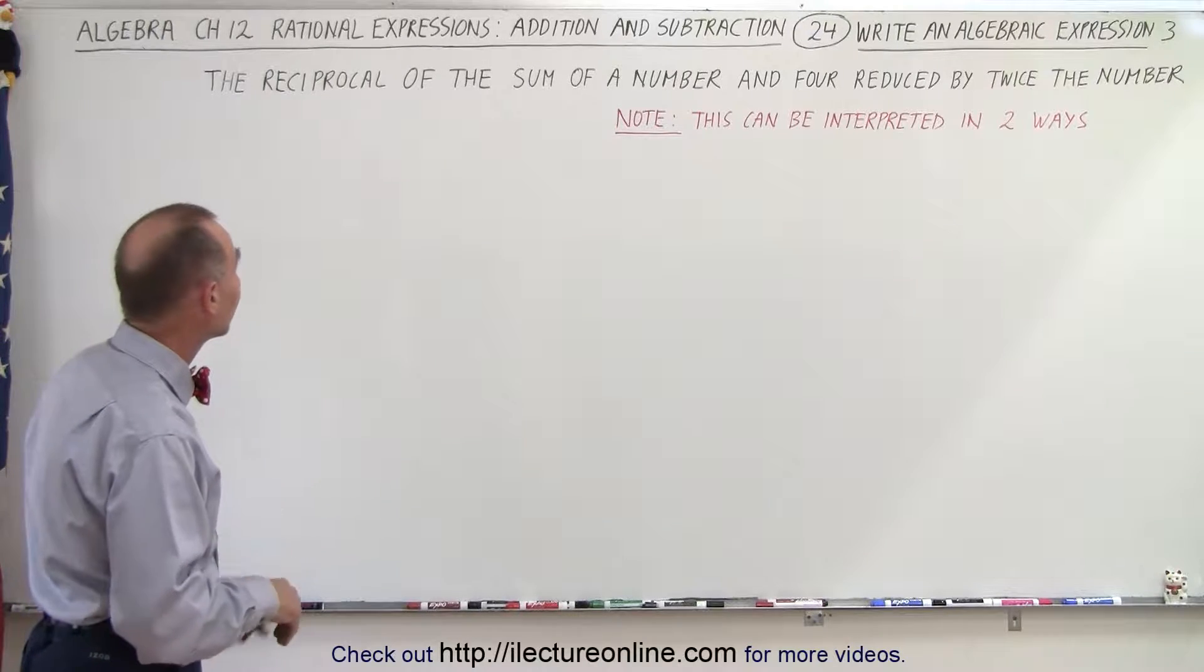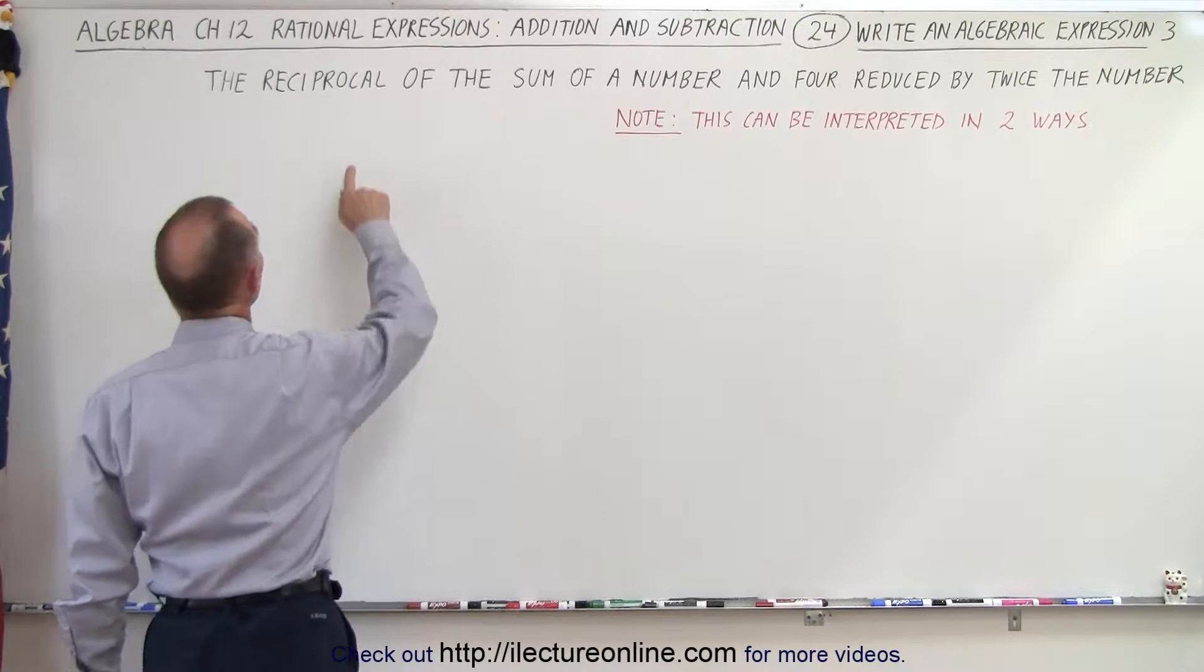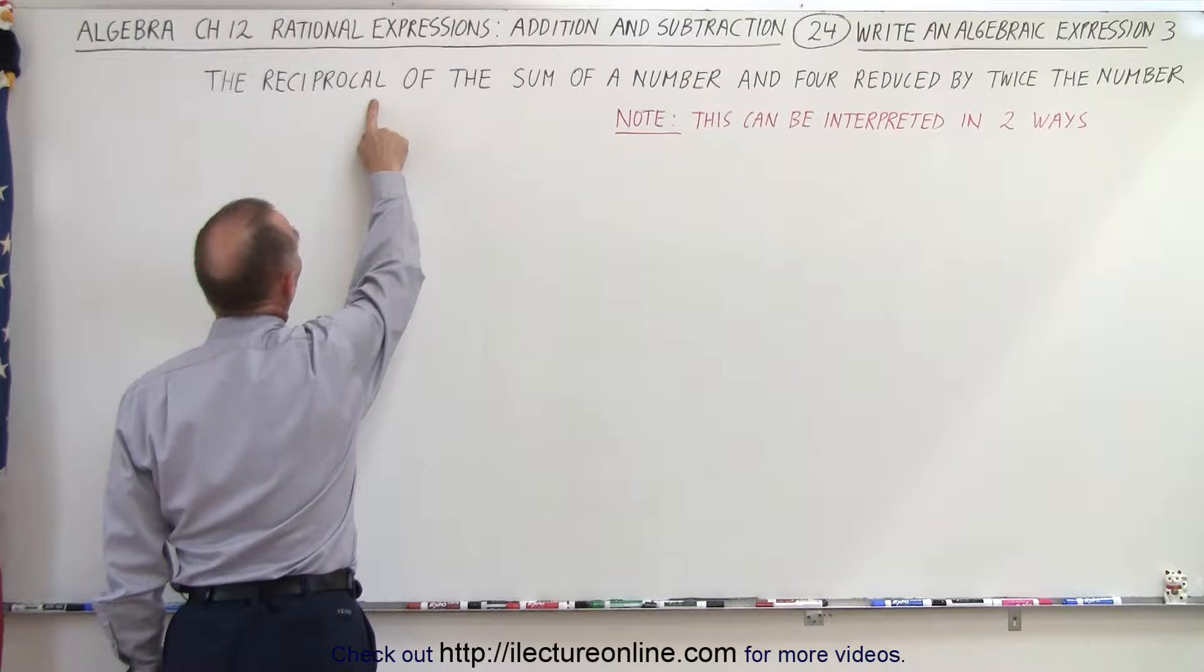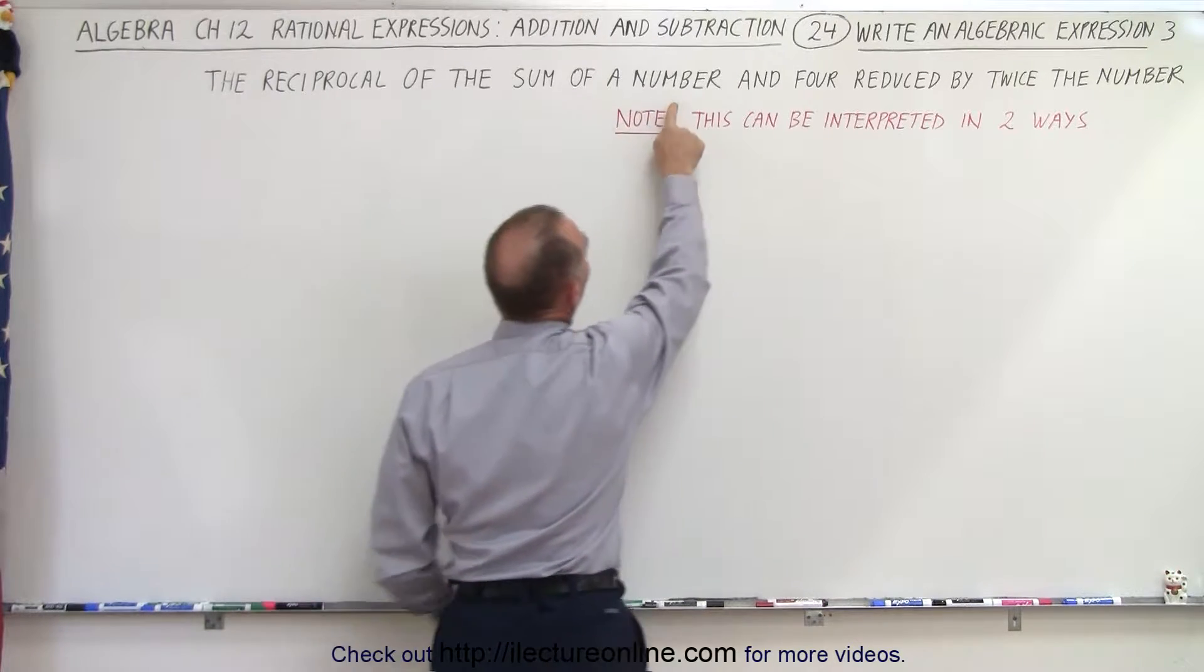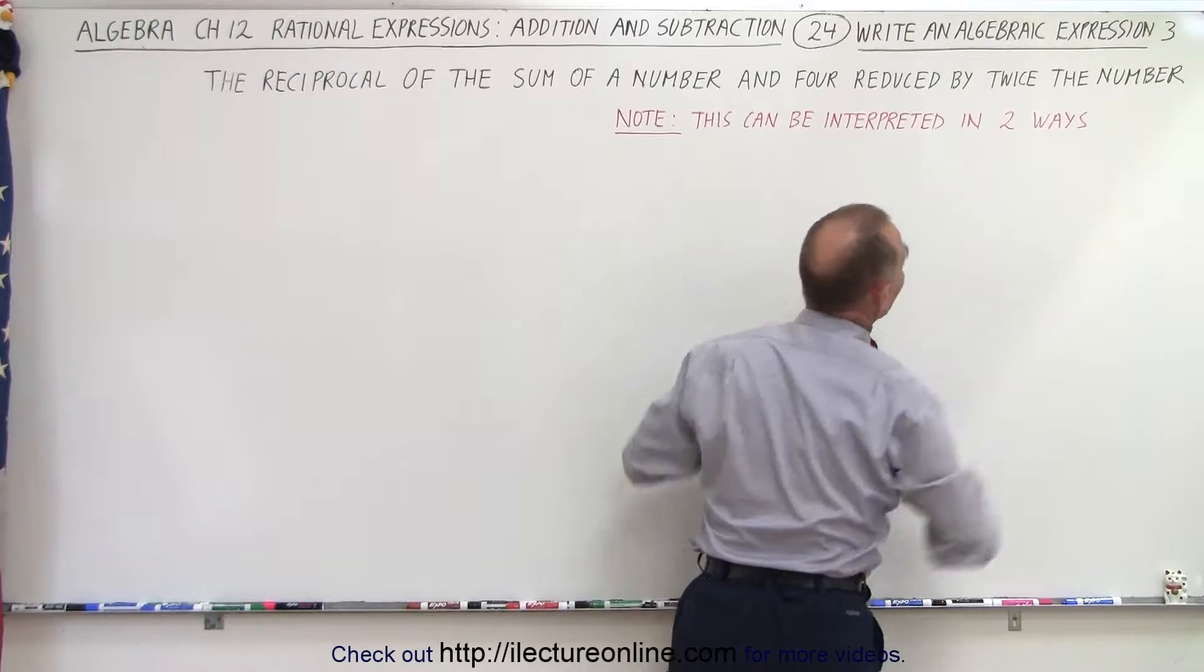This can actually be interpreted in two ways. The first thing we can say is the reciprocal of the sum of a number and four reduced by twice the number.